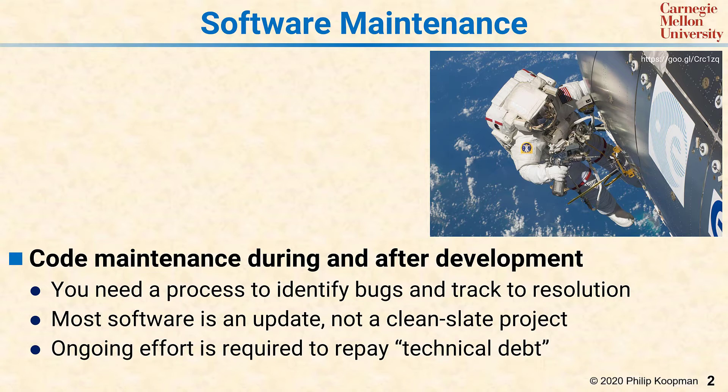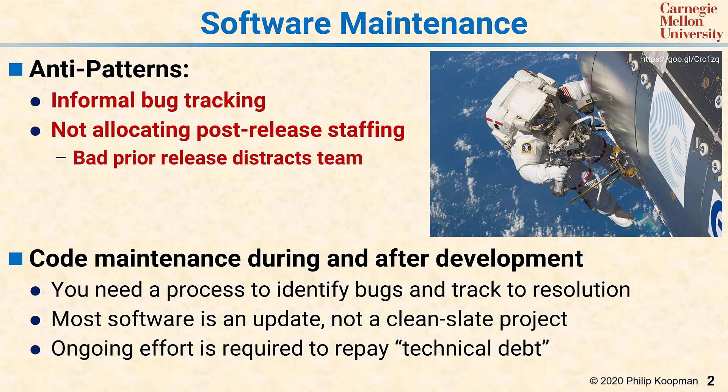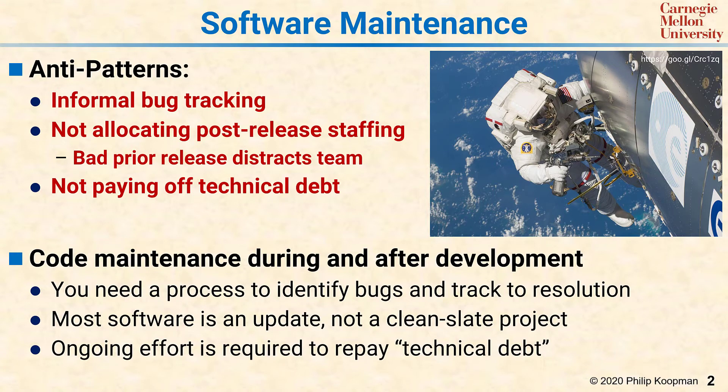The anti-patterns for software maintenance are that you don't have any formal bug tracking — so your bug tracking is informal, think Post-it notes. You don't allocate post-release staffing, which means that every time there's a bug after release, it disrupts the work on the next version. And you're not thinking about paying off technical debt on a regular basis.